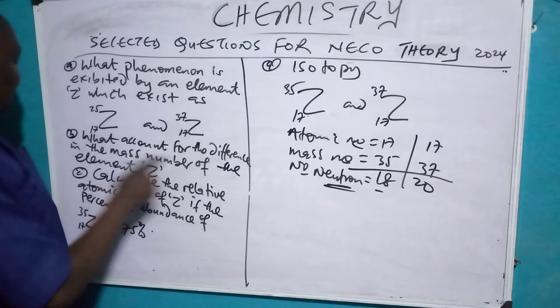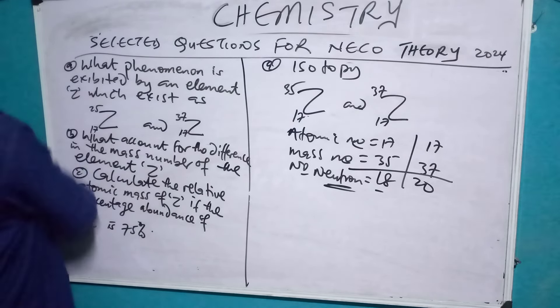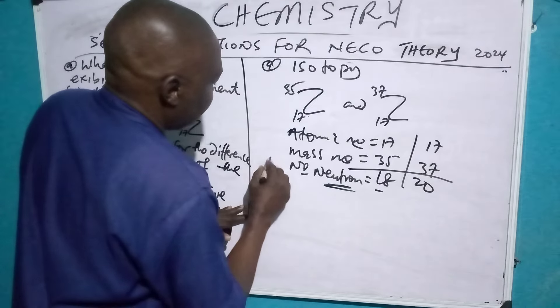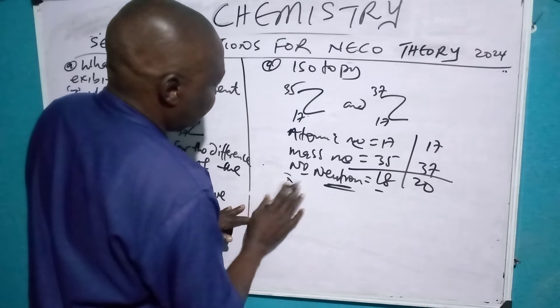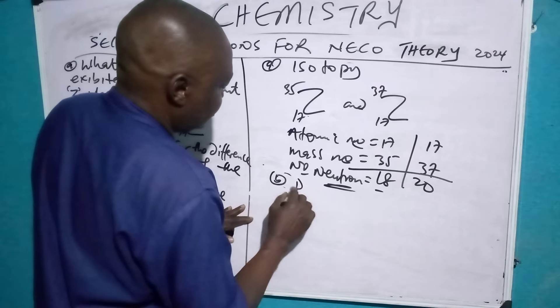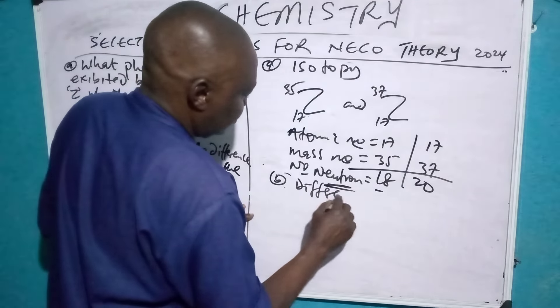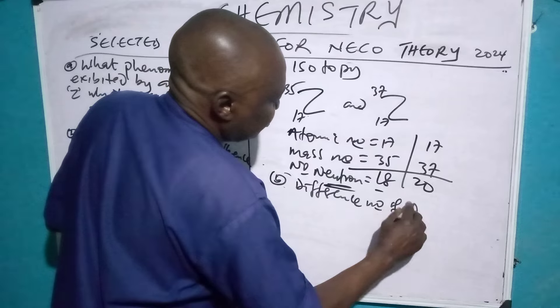What account for the difference in the mass number of the element? So, B, different number of neutrons. Number of neutrons. Number of neutrons.